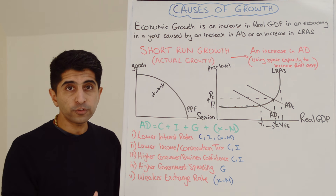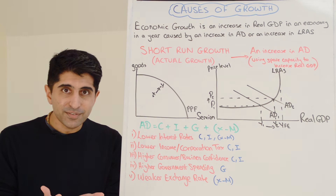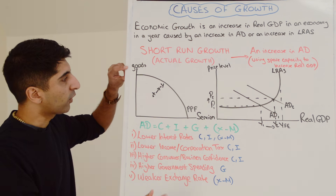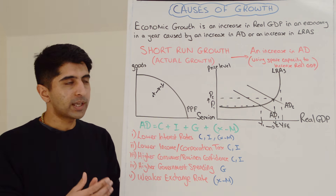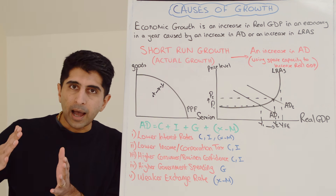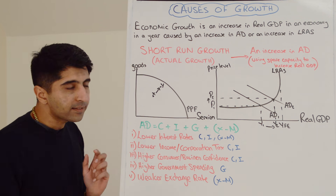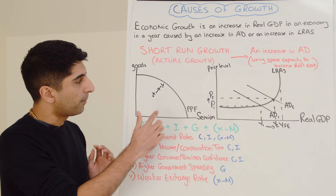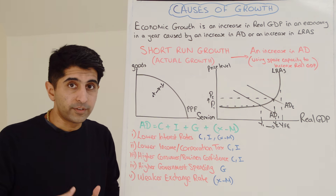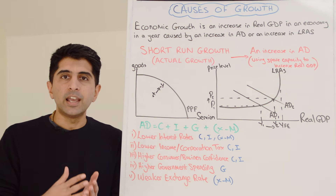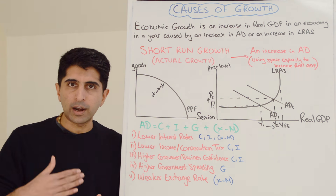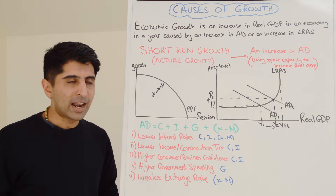We can also use a PPF diagram to show short-run growth. We need to show a negative output gap on a macro PPF — that's point X. When drawing a macro PPF, the axes should show goods and services, or capital goods and consumer goods. Being inside the boundary means we are inside our productive potential, giving us a negative output gap. A movement from inside the PPF towards the PPF boundary — from X to Y — represents short-run economic growth. Think of the PPF curve as the LRAS curve; aggregate demand is moving towards that LRAS curve.